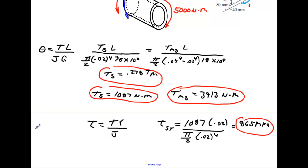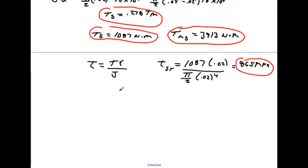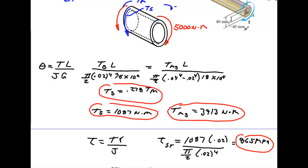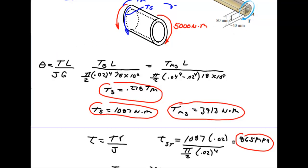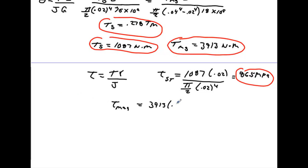We'll do that for the magnesium. Now, the magnesium is hollow. Its maximum will occur at the outer edge, not the inner edge. So we'll take the torque that we've had for the magnesium, which we said was 3913. We'll multiply it by the maximum radius. And we set up here, maximum radius from the center out to the edge is going to be half of 80 or 40. So convert that back to 0.04. We'll divide that by, now again, it's hollow. So you've got to do pi over 2 times the outer radius to the fourth power minus the inner radius to the fourth power. And we run that, we'll get 41.5 megapascals.